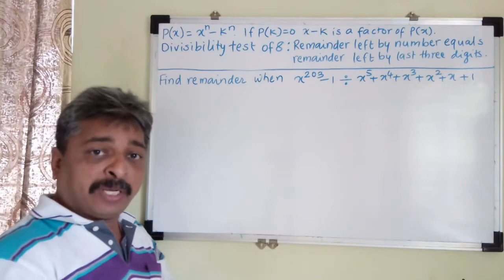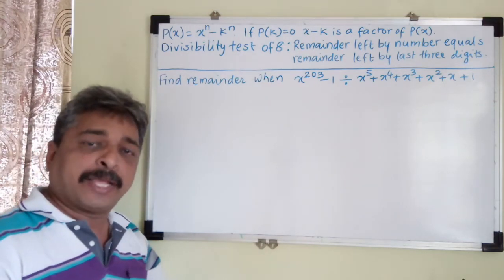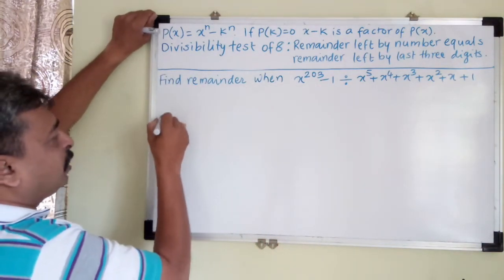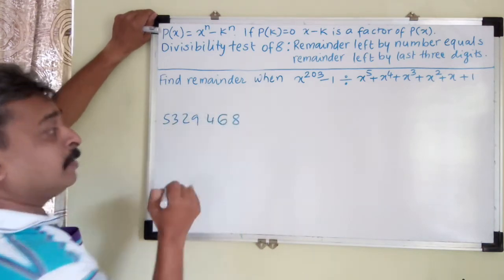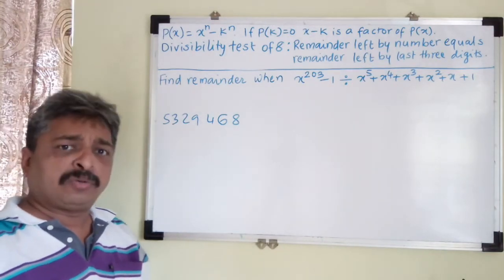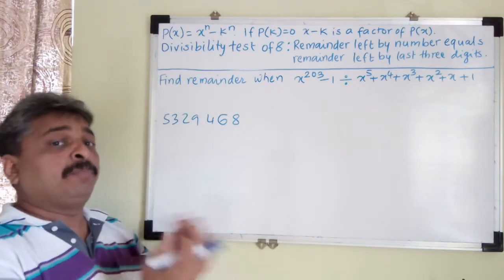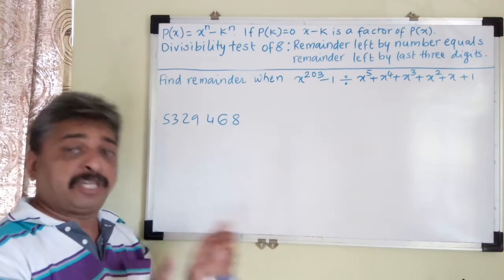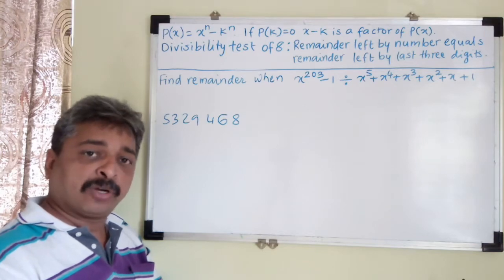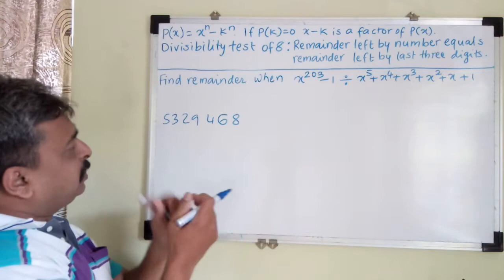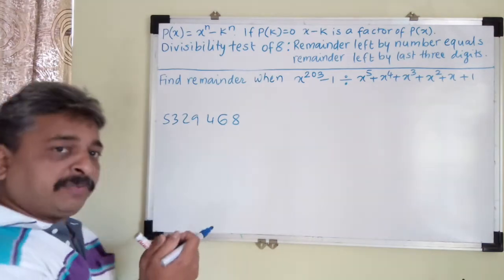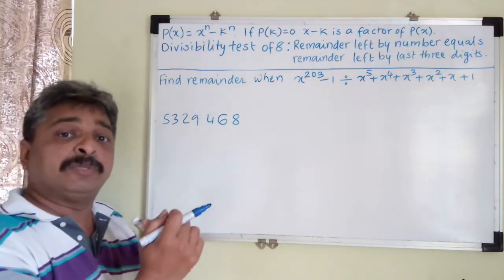The remainder left by a number when divided by 8 is exactly the same as the remainder left by the last three digits of the number. For example, suppose I have a big number 5,329,468. Checking divisibility by 8 for a large number takes huge time, but this test says just check the last three digits. The number is not divisible by 8 because its last three digits are not divisible by 8.